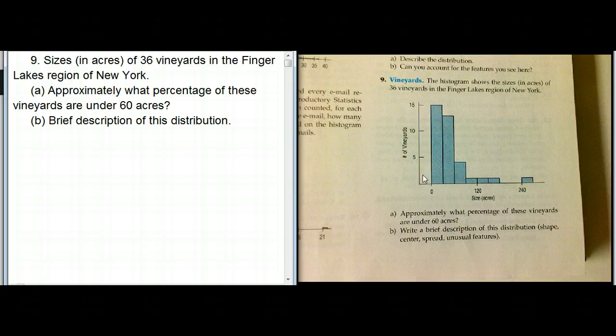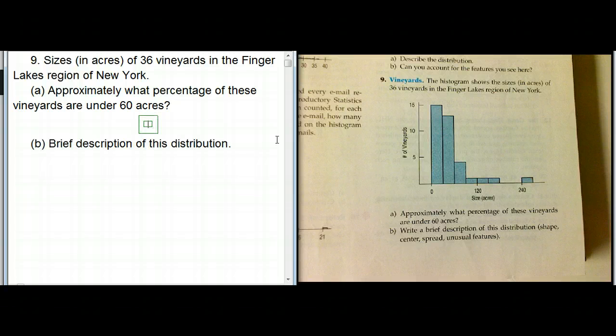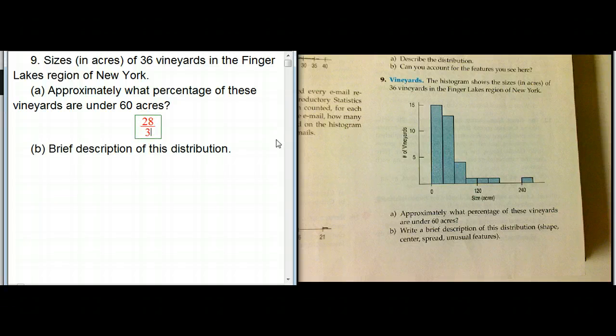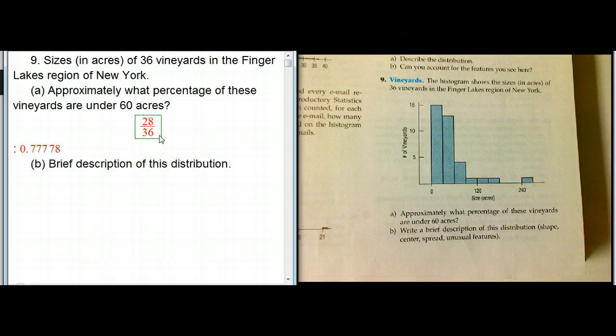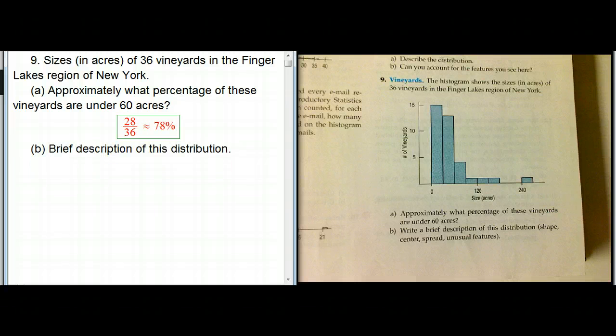So we can count how many of the 36 vineyards are under 60 acres. They don't put a number 60 here, but that's clearly halfway between 0 and 120. So it looks like 15 plus 13, about 28 out of the 36. So we're getting 28 over 36, and we can just compute that - about 78%. So a little over three quarters of the vineyards are under 60 acres. That's just a basic question about how you use histograms.